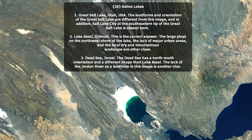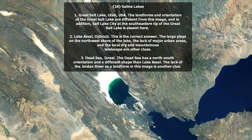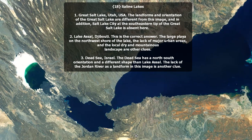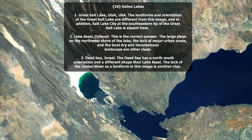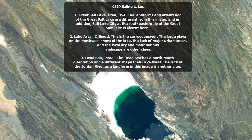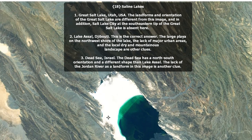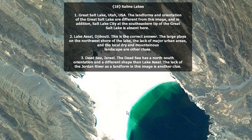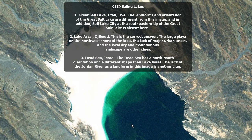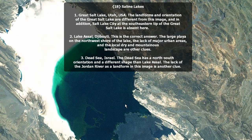Saline lakes. Great Salt Lake — the landforms and orientation are different, and also Salt Lake City at the southeastern tip of the Great Salt Lake is absent here. Lake Assal, Djibouti is the correct answer. The large playa on the northwest shore of the lake, the lack of major urban areas, and the local dry and mountainous landscapes are the other clues. Dead Sea, Israel has a north-south orientation in a different shape than Lake Assal. The lack of the Jordan River as a landform in this image is another clue.